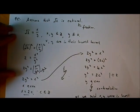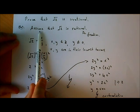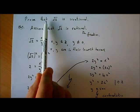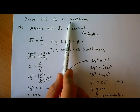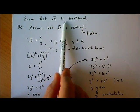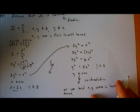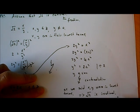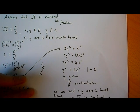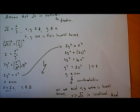Because we found a contradiction, what we assumed to be true must be false. Our assumption was that the square root of 2 is rational, and that turned out to be false. Therefore, the square root of 2 must be irrational. QED - quod erat demonstrandum - which means 'that which was to be demonstrated.' That's the proof done.